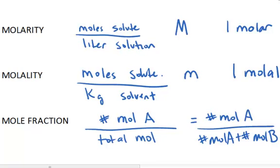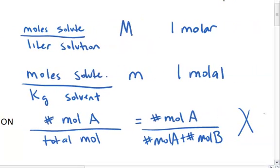Mole fraction is abbreviated capital X, sometimes in italics, and if you're talking about the mole fraction of a particular component, you'd say mole fraction of A equals the moles of A over the total moles. And of course, mole fraction, since you're dividing moles by moles, is a unitless unit.